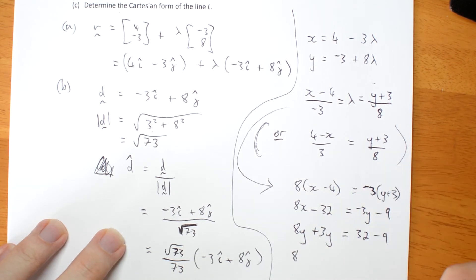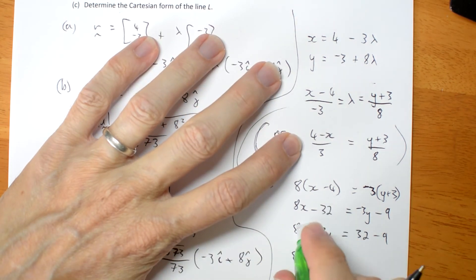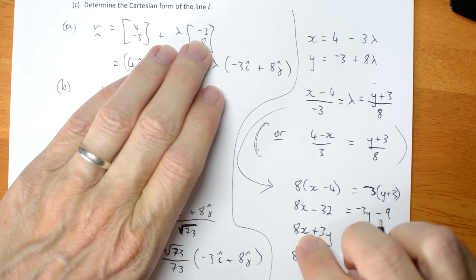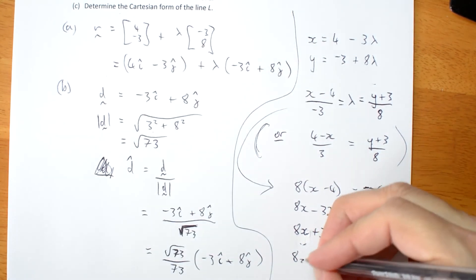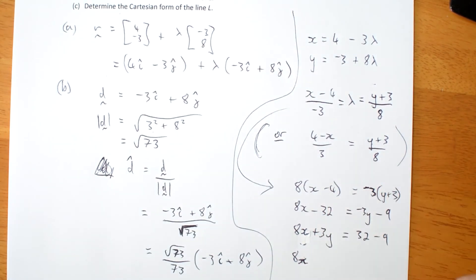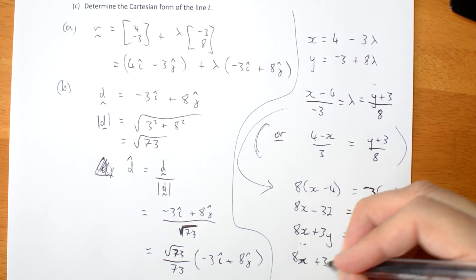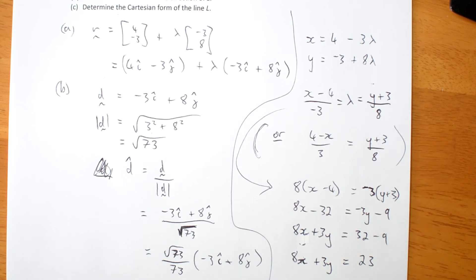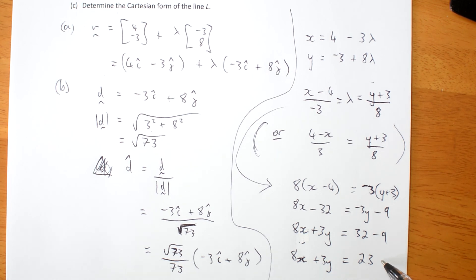What did I do? Ah, that's what I did. That should have been an x. Sorry about that, I wasn't paying enough attention. 8x plus 3y equals 23. And there's my Cartesian form of the line L in standard form.